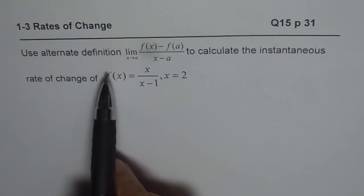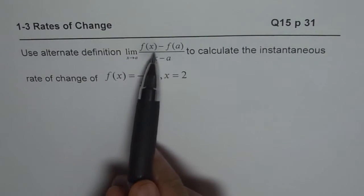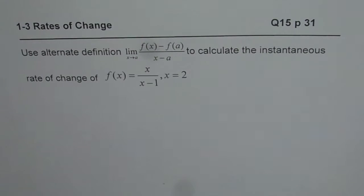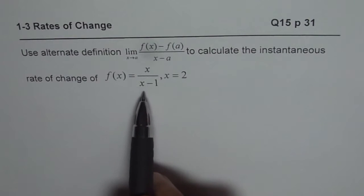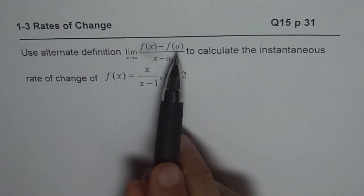The question here is, use alternate definition, limit x approaches a, f of x minus f of a divided by x minus a, to calculate the instantaneous rate of change of the function f of x equals x over x minus 1, at x equals 2.